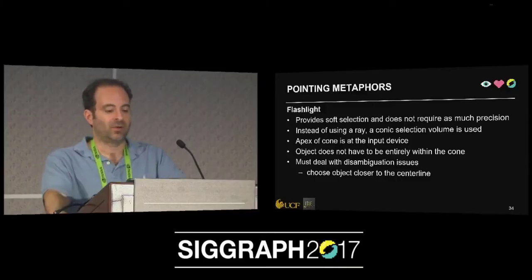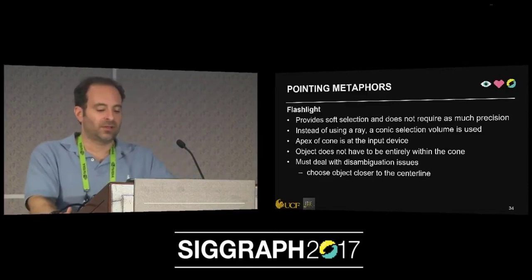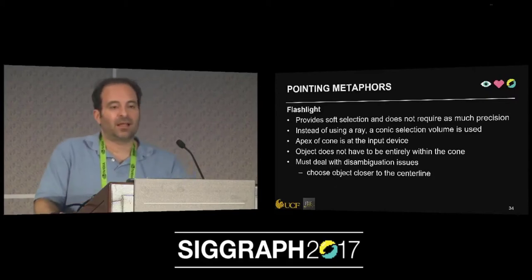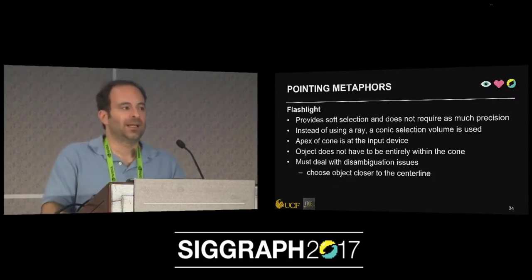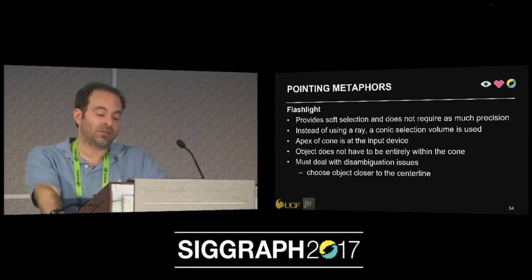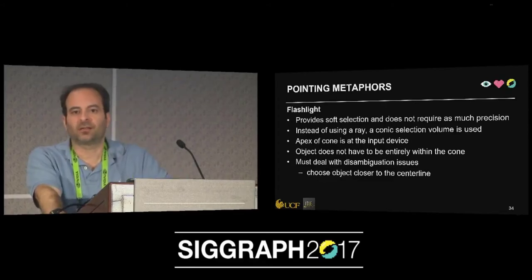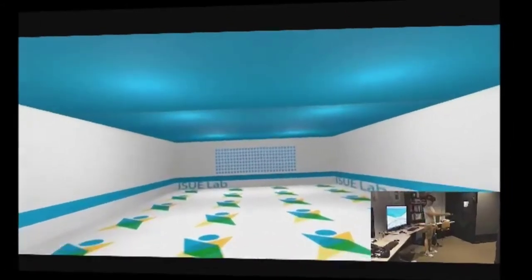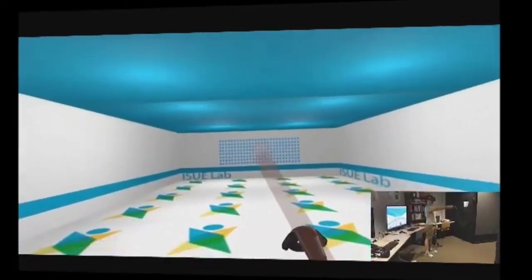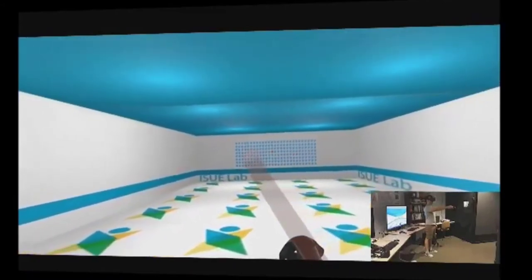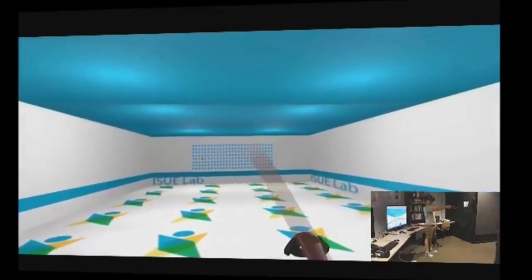With the flashlight technique, instead of using an actual ray, we're going to use a conic section volume. That allows you to be a little bit less precise in doing selection of objects — you have to choose the object that's closer to the center line. The objects are really far away; it would be very hard to pick one with a ray, but I can go ahead and pick them with the flashlight, just choosing the one in the center.